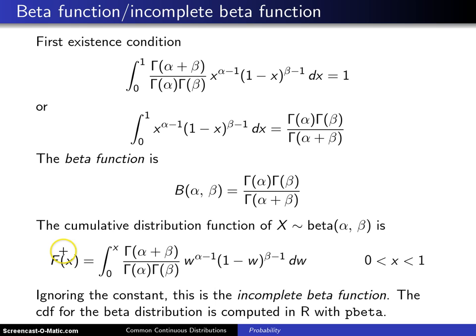So when you are trying to calculate probabilities associated with a beta random variable, for example in R with the pbeta function, that routine will call the incomplete beta function to calculate its probabilities.